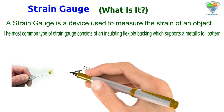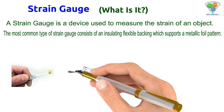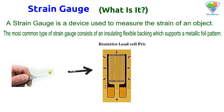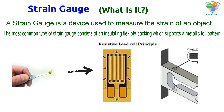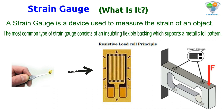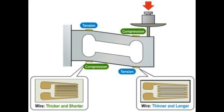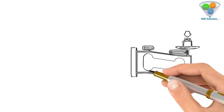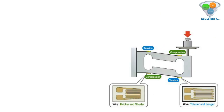On the right side you can see a load cell which has four strain gauges. When force is applied, the gauges compress or expand, causing a resistance change in the strain gauges, and that is measured in the form of voltage by a bridge.